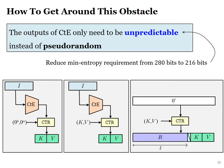To get around this obstacle, we realized that the outputs of CTE will be used to derive a key and an IV for counter mode. Therefore, if we model AES as an ideal cipher, these outputs only need to be unpredictable instead of pseudo-random. As a result, we can circumvent the requirements in the classic work of Dodis et al. As an added plus, because we only need the outputs of CTE to be merely unpredictable, we can reduce the min-entropy requirement from 2^80 bits to 2^16 bits.